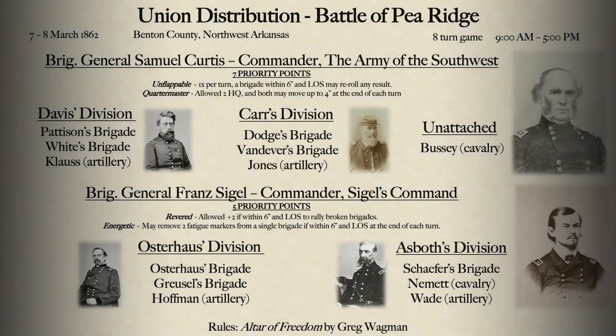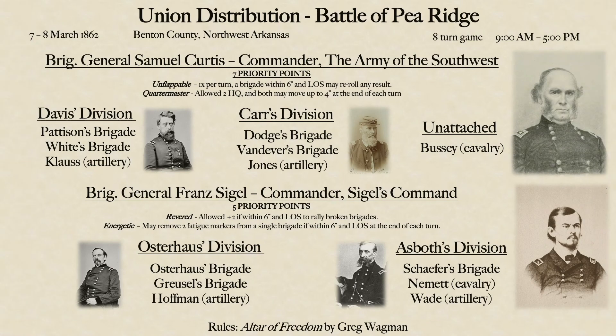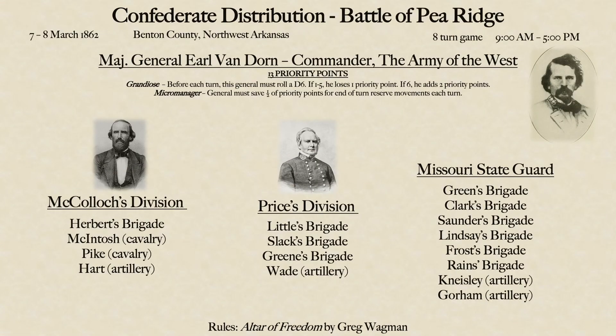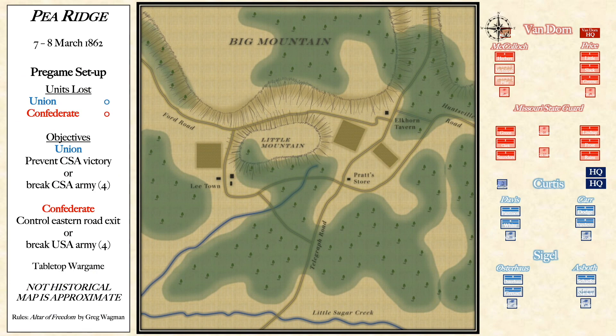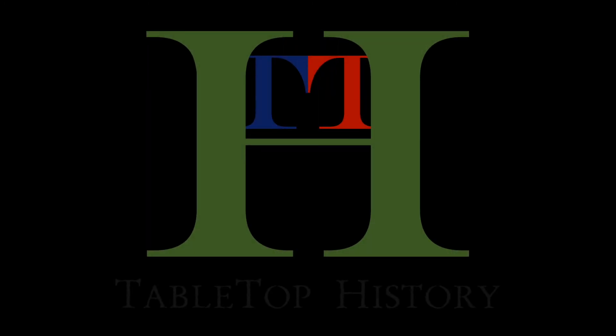Our players will be reenacting the Battle of Pea Ridge, also sometimes known as Elkhorn Tavern. With the Union side under Brigadier General Samuel Curtis and Franz Siegel, there will be four divisions at their disposal, included with an unattached cavalry unit that they can decide to use however they want. Standing against them will be the Confederate command under Earl Van Dorn, with McCullough's division, Price's division, and the Missouri State Guard deployed as they were historically. How the battle plays out we will have to see, so we hope you join us next time as we begin to reenact the Battle of Pea Ridge, Arkansas, on Tabletop History.